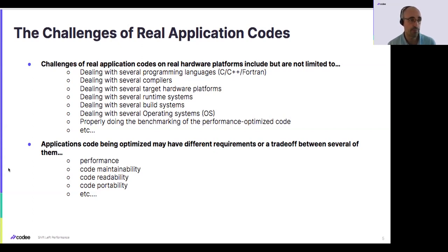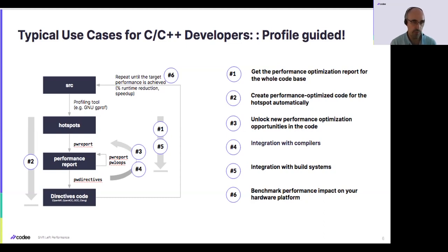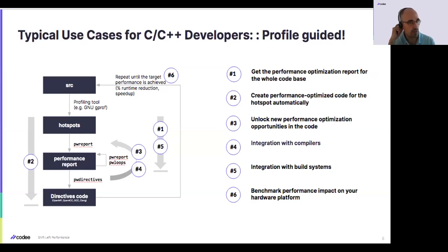For that purpose, if you remember the typical use cases for C, C++, and Fortran developers — which is profile-guided — we have been focusing on the two first use cases: number one, get the performance optimization report; and number two, get details about specific actions and use the source code rewriting capabilities to annotate your code with OpenMP and OpenACC. But we have also designed other typical use cases: use case number three, four, five, and six. For instance, look at use case number four — interaction with compilers. Can we enrich the performance optimization report of CodeE and compare what it adds with respect to the existing compiler?